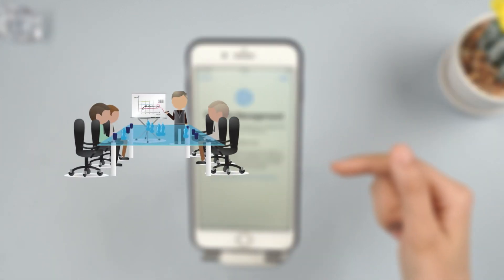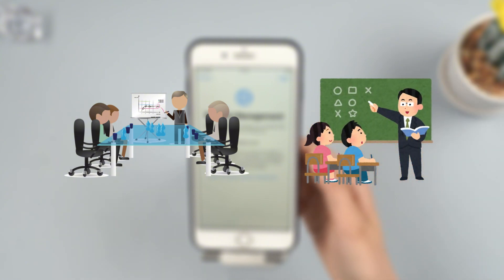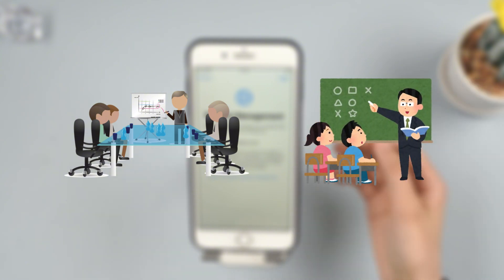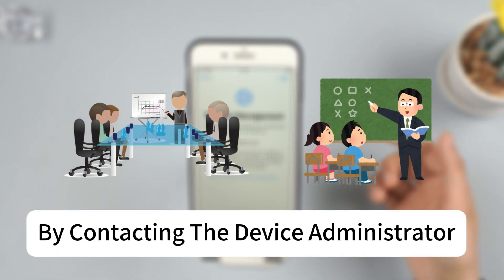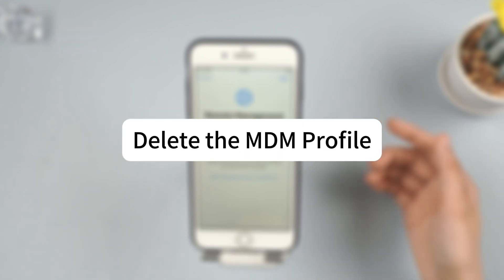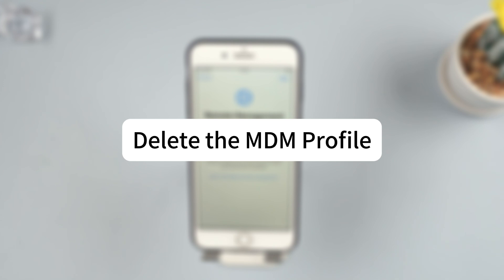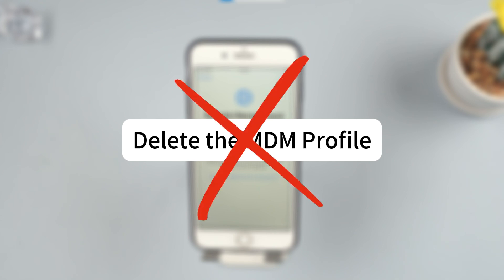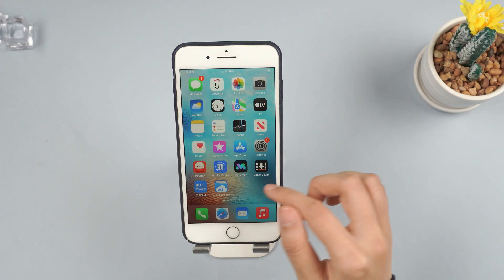If your company or school manages the MDM profile on your device, the easiest way to remove it is by contacting the device administrator. Ask them to delete the MDM profile and it will be removed. If you can't reach the administrator, you'll need to remove the MDM profile yourself.